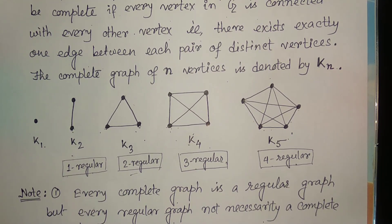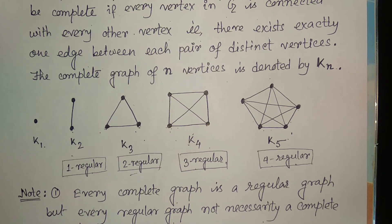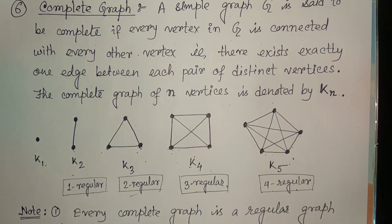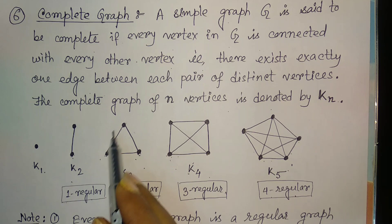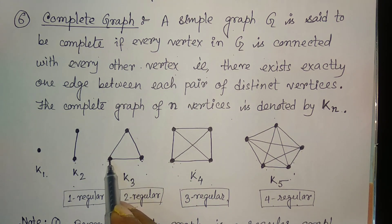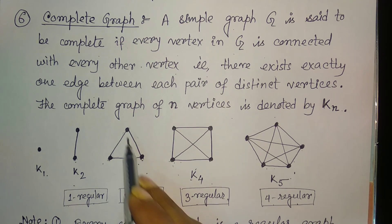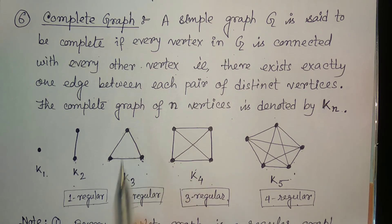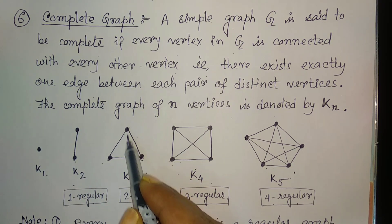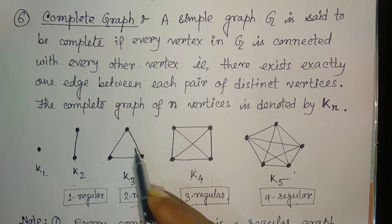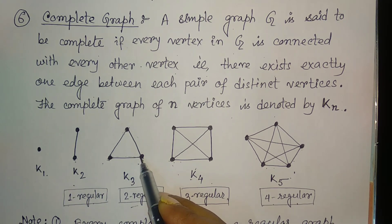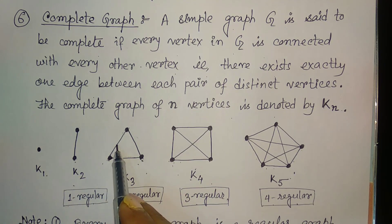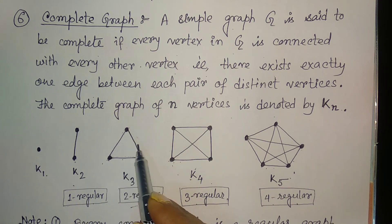The second conclusion is that Kn, the complete graph with n vertices, has exactly n(n-1)/2 edges. To see why: from the first vertex we draw n-1 edges, from the second n-2 edges, from the third n-3 edges, and from the last zero edges. Summing these gives (n-1) + (n-2) + ... + 1, which equals n(n-1)/2.